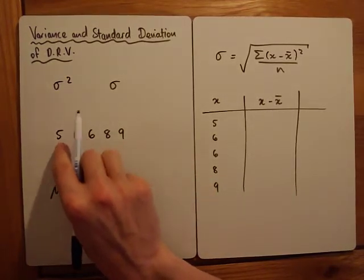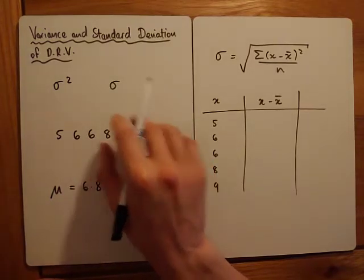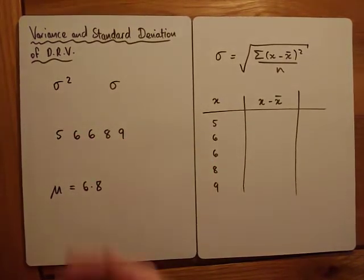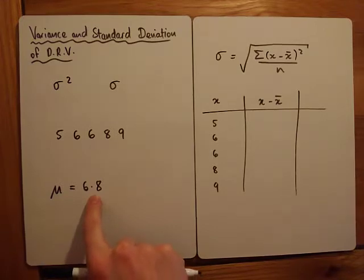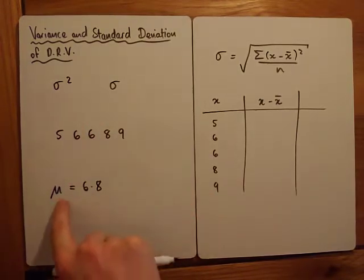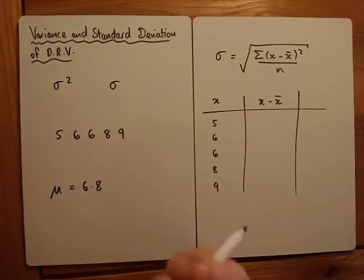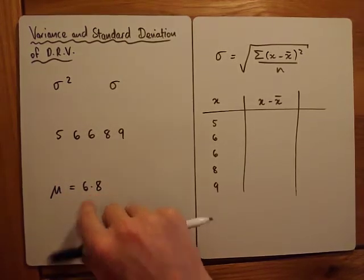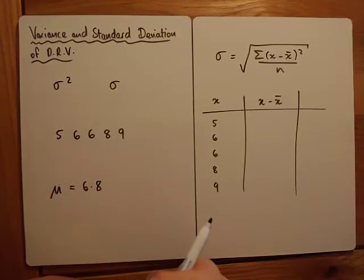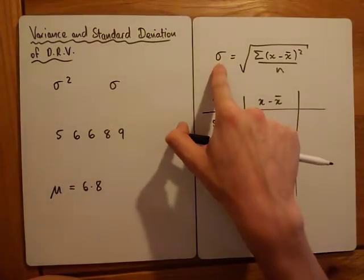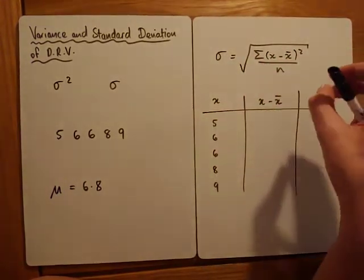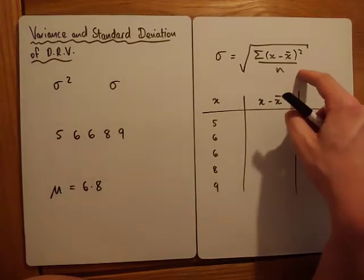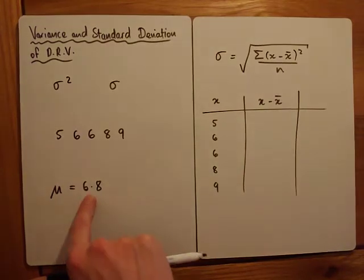For example, if our sample is 5, 6, 6, 8, and 9, the average outcome is 6.8 — we use mu to stand for the mean. But rather than just the average, what I want to know is how spread out the numbers are. The way we calculate the standard deviation uses this formula — let's get a feel for what it's actually calculating rather than getting lost in notation.